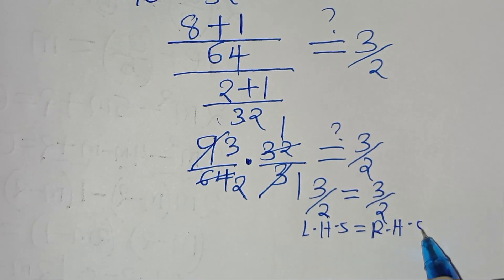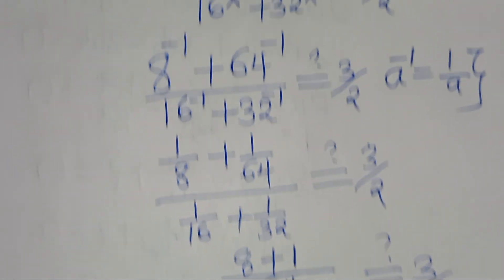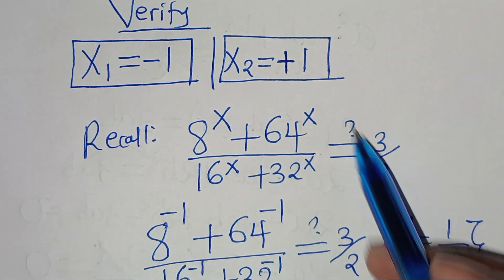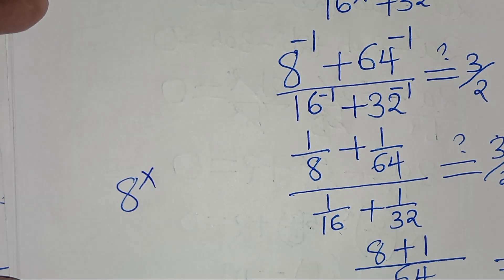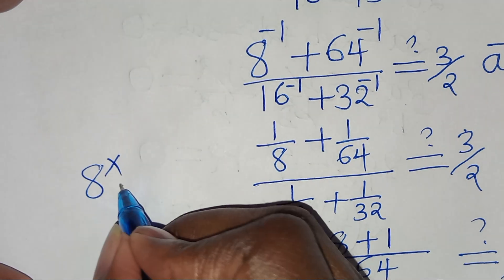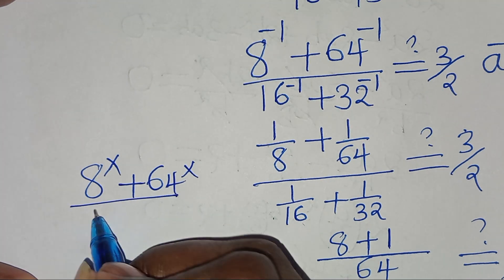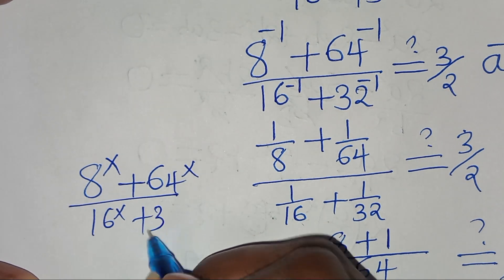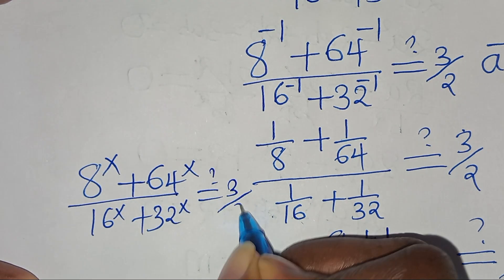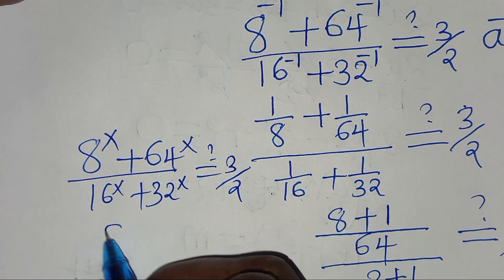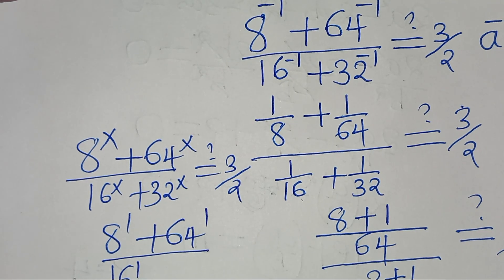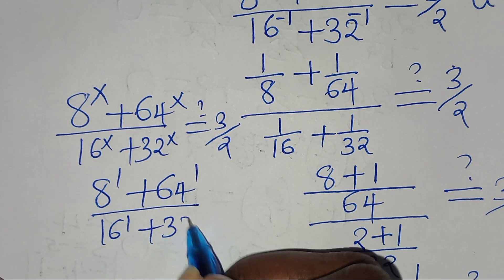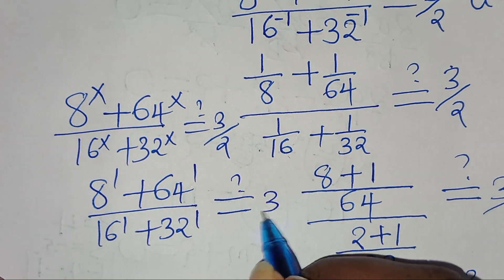This proves that x₁ equals minus 1 satisfies the equation. Now let's take x₂ equals 1. We have 8 raised to the power of 1 plus 64 to the power of 1, divided by 16 to the power of 1 plus 32 to the power of 1. This should give us a value of 3 over 2.